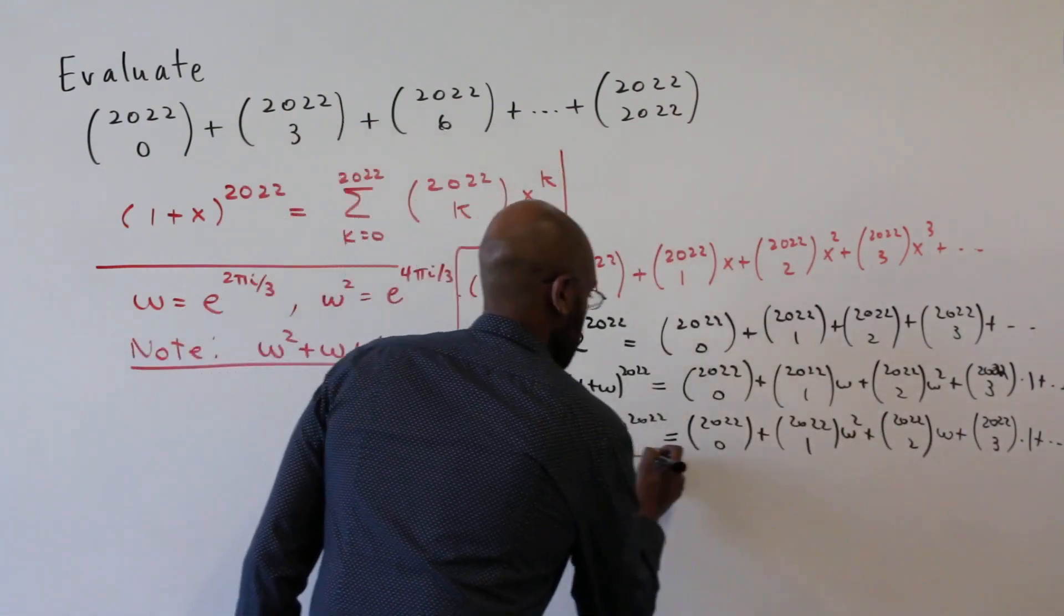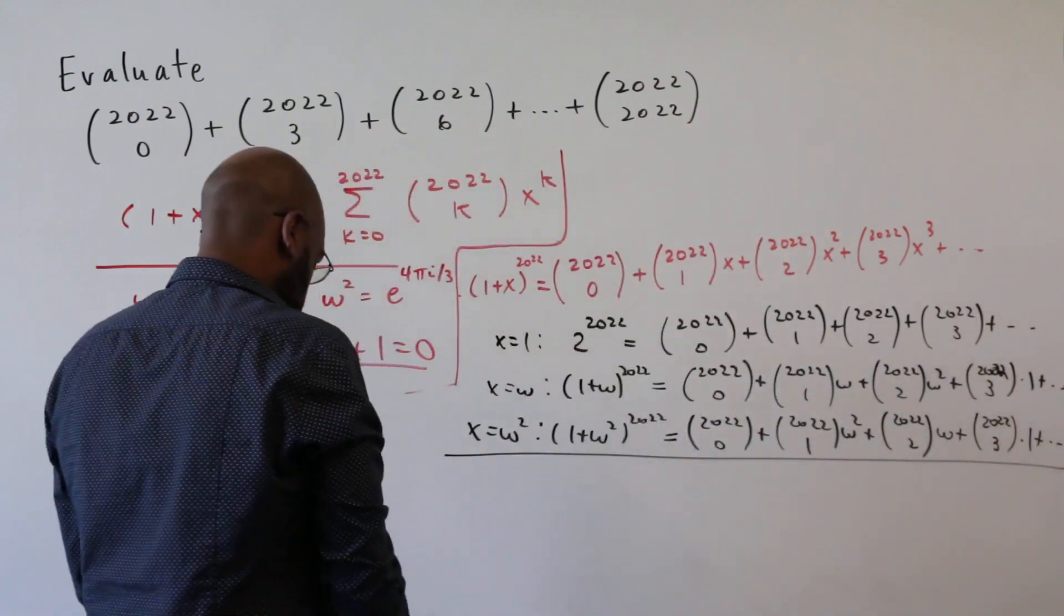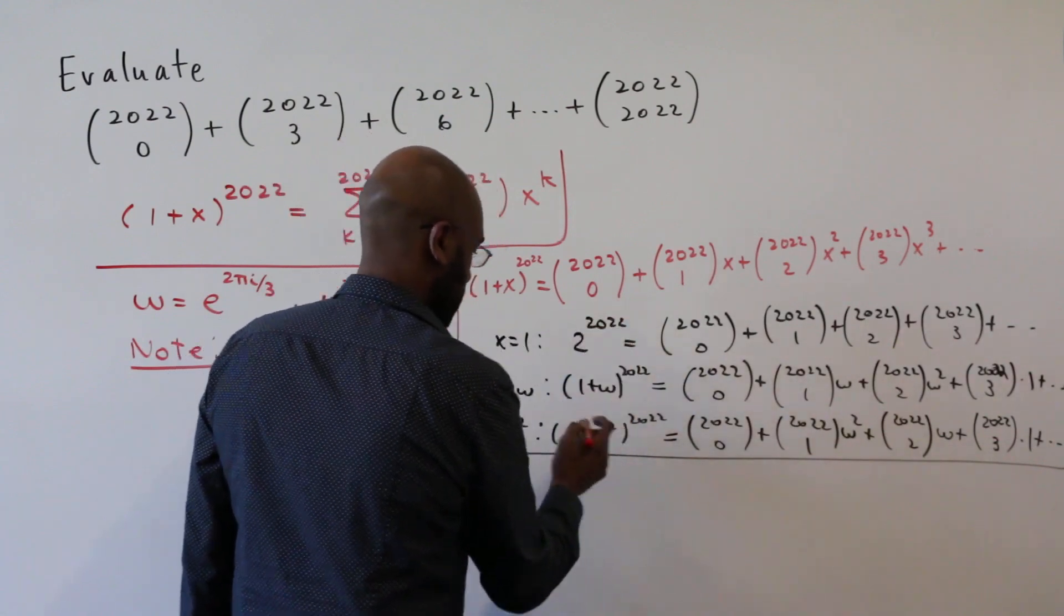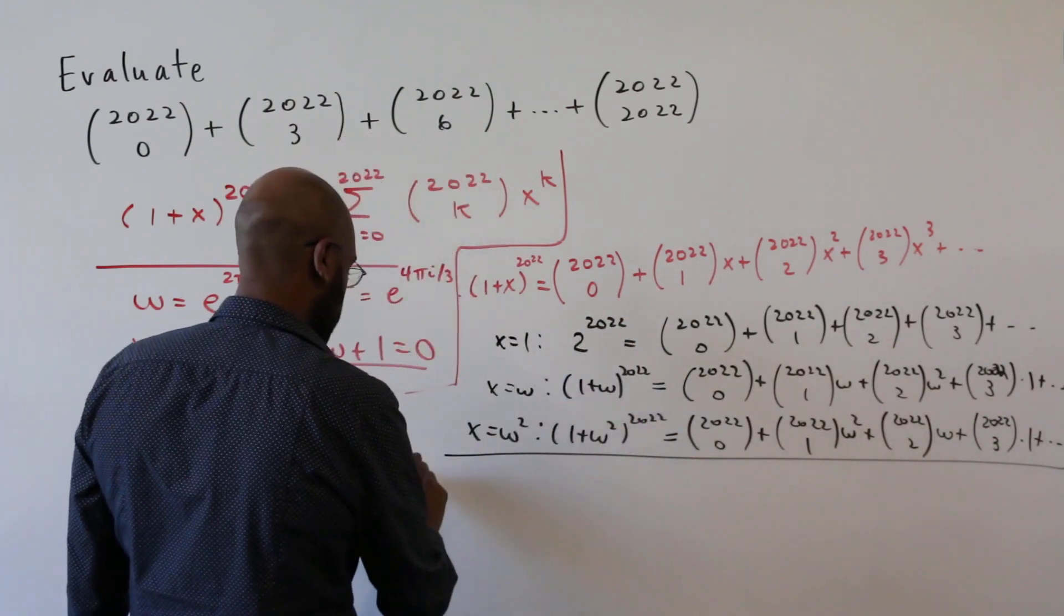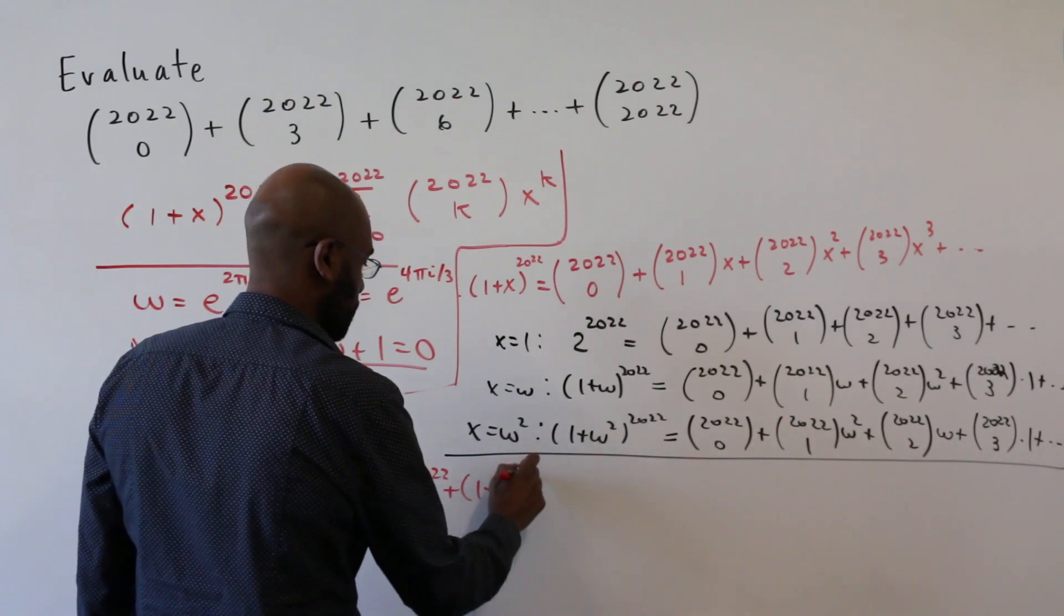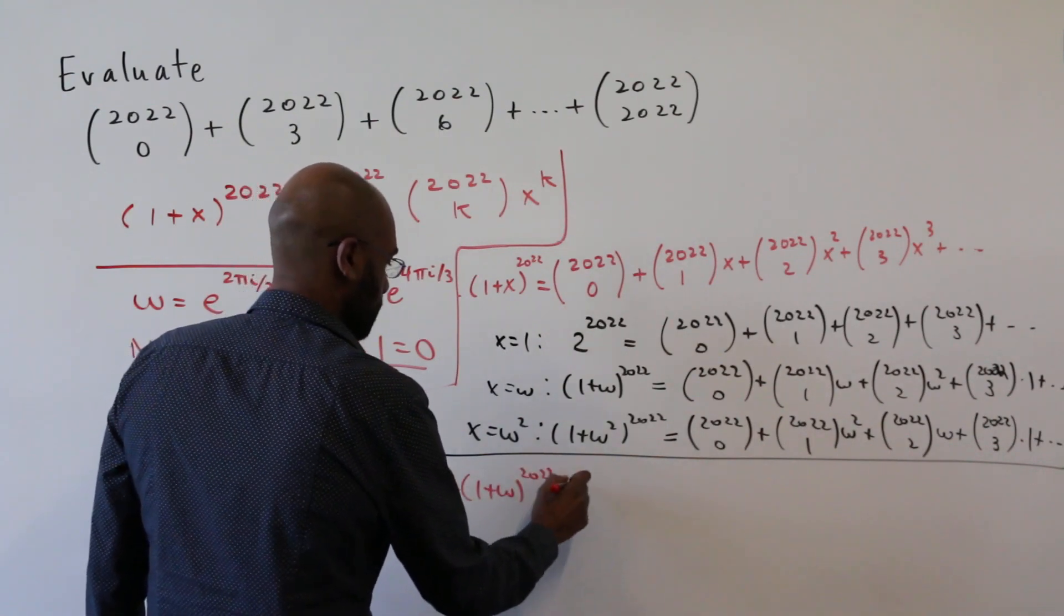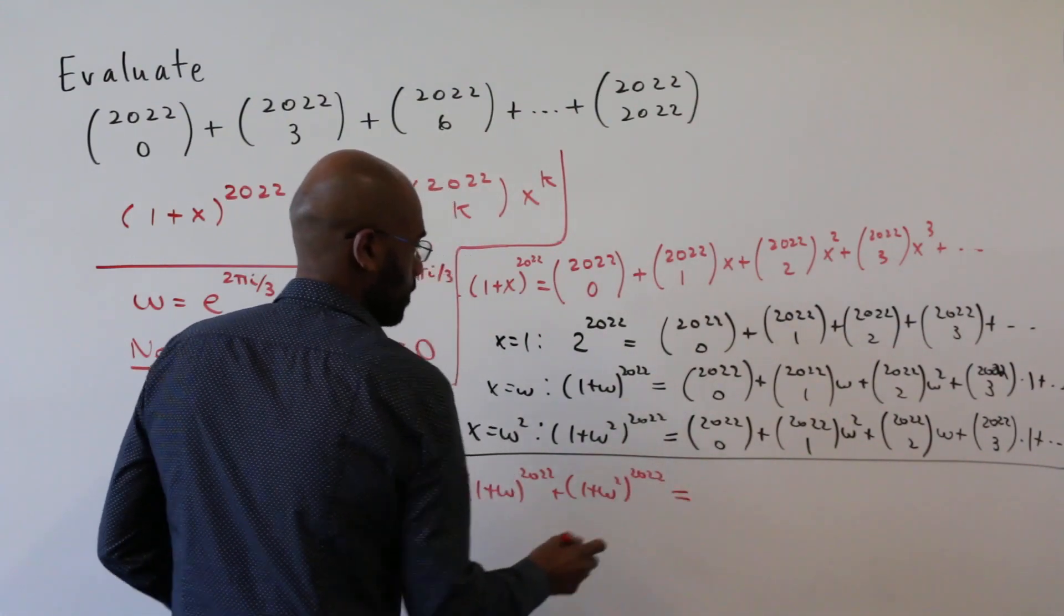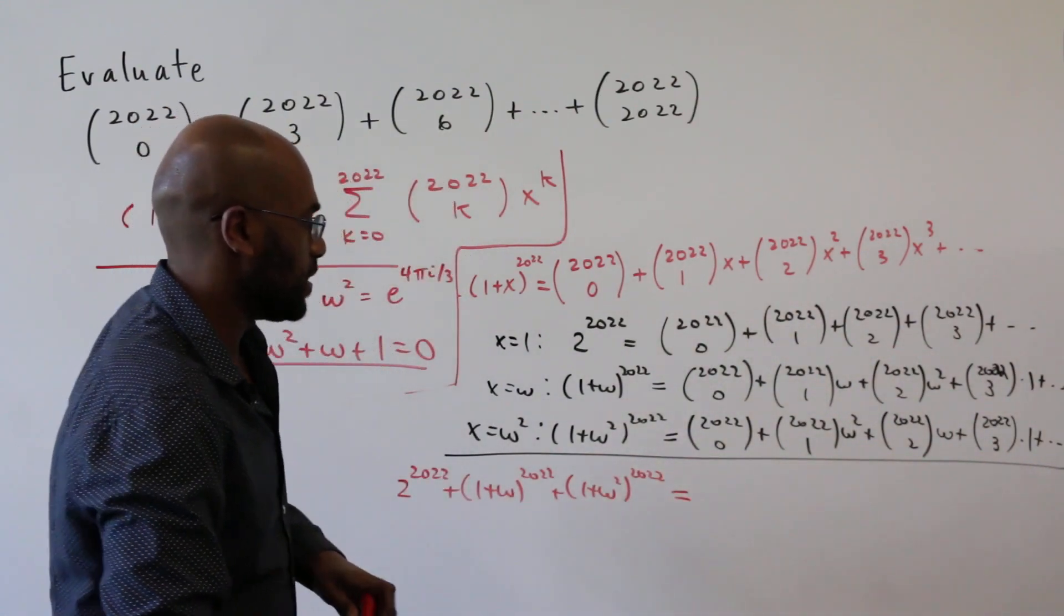So what we can do is add these column by column. Now on the left, we'll have two to the 2022 plus one plus omega to the 2022 plus one plus omega squared to the 2022. And let's look at what we have on the right hand side. We'll get three copies of this first coefficient.